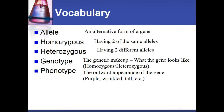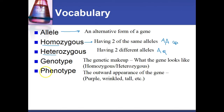Let's talk about some vocabulary. An allele is an alternative form of a gene. Homozygous — homo meaning same — means having two of the same type of alleles, like big A big A or little a little a. Heterozygous — hetero meaning different — means having two different alleles, like big A little a. Genotype is the genetic makeup of an organism — what the actual genes look like, such as big A little a big B little b. Phenotype is the outward or physical appearance determined by the genes — for example, big A meaning purple, or big B meaning tall.